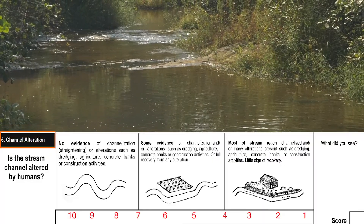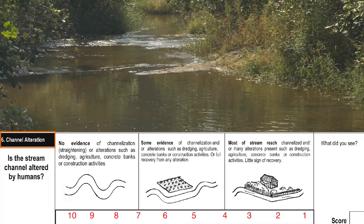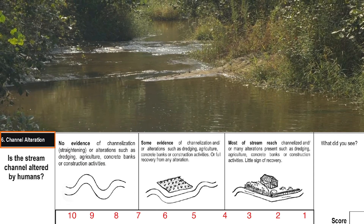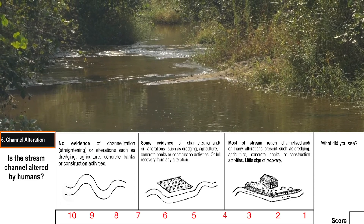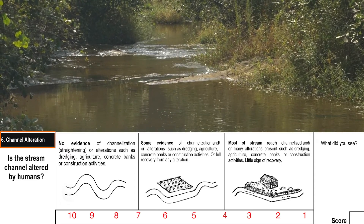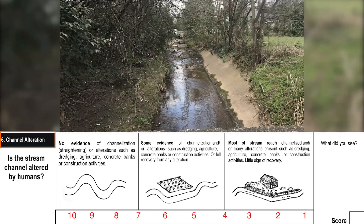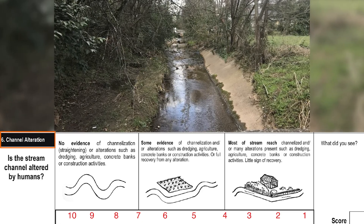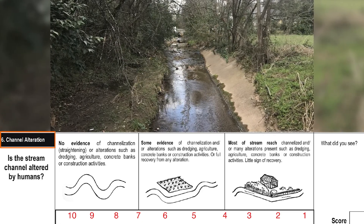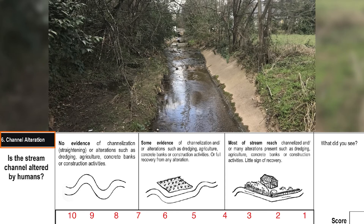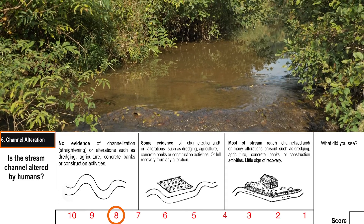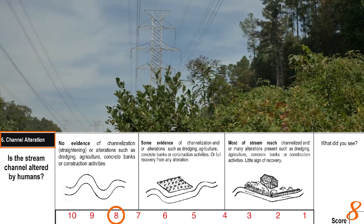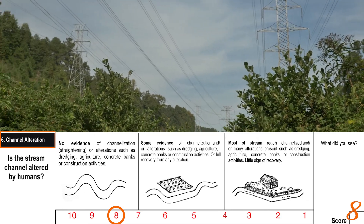Channel alteration considers not only has the stream channel been modified, but has the stream recovered from these historical modifications. In many cases, these changes can be quite obvious. For example, is your stream the width of a bulldozer? There is no evidence of alteration in this channel, though there is in our surrounding area here.